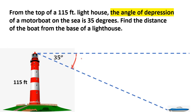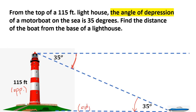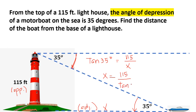This is 35 degrees, and using the properties of angles in parallel lines, this angle is also 35 degrees. This is our reference angle, this is the opposite side, and this is our adjacent. Using opposite and adjacent we can use tangent again. Tangent 35 degrees — x equals 115 over tangent 35 degrees.